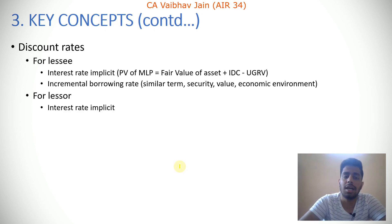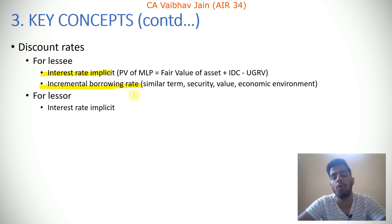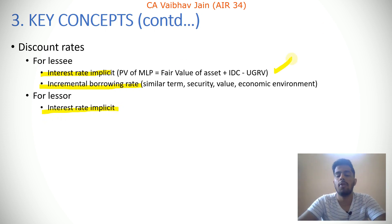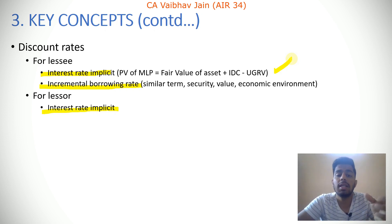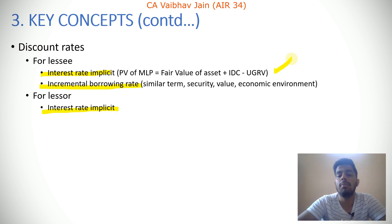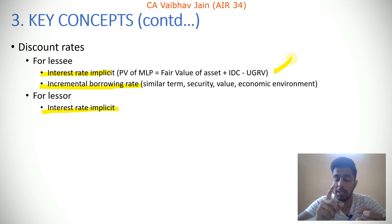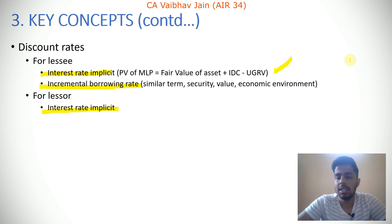Key discount rate: for a lessee, the discount rate is the interest rate implicit in the lease; if unavailable, the incremental borrowing rate is used. For a lessor, the interest rate implicit is always used. The interest rate implicit is arrived at by finding the rate at which the present value of lease payments equals the fair value of the asset plus initial direct costs minus the unguaranteed residual value. The incremental borrowing rate should reflect a similar term, security, value, and economic environment.